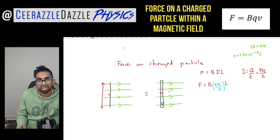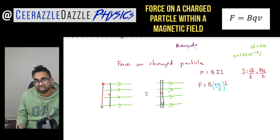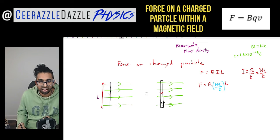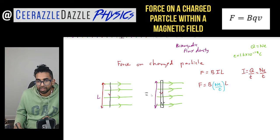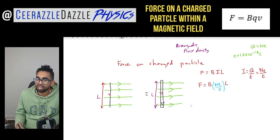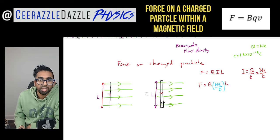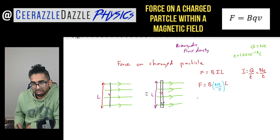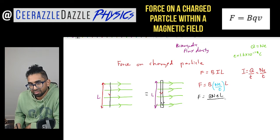Don't forget that B stands for magnetic flux density — B is the magnetic flux density. And L is the length of the wire here, which is the same as this length over here. So now rearranging, F is equal to BNeL divided by t.